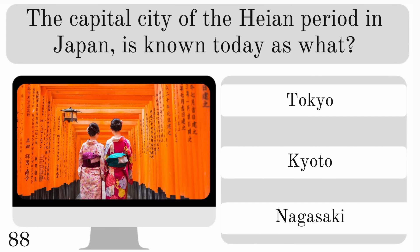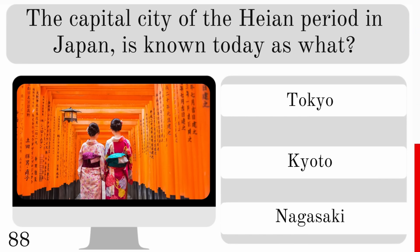The capital city of the Heian period in Japan is known today as what? Tokyo, Kyoto or Nagasaki? And the answer — Kyoto.